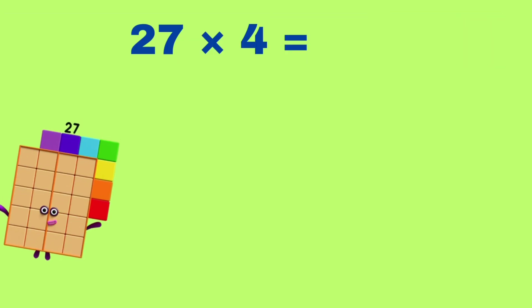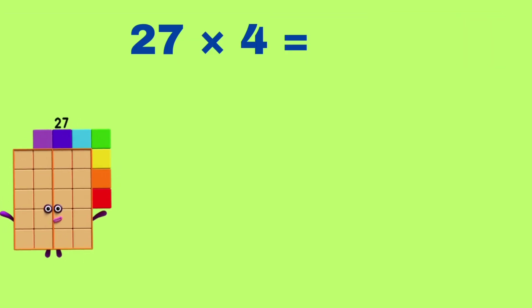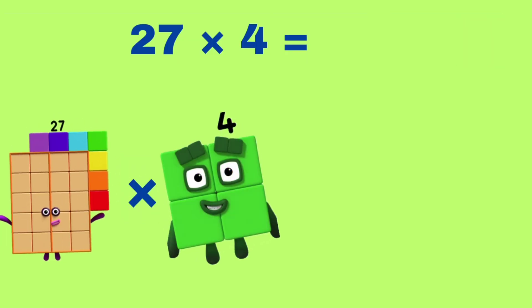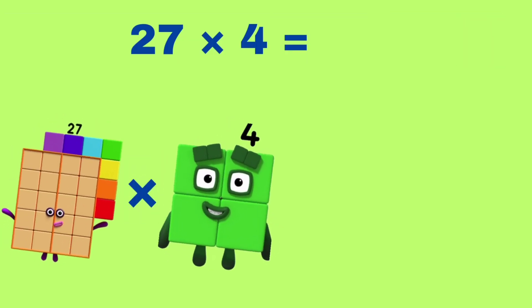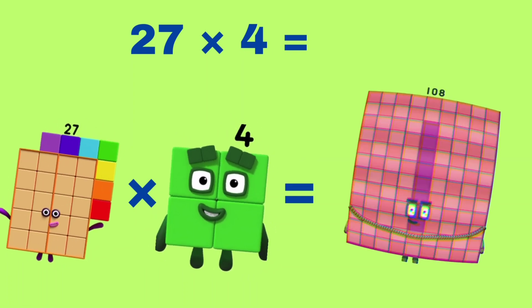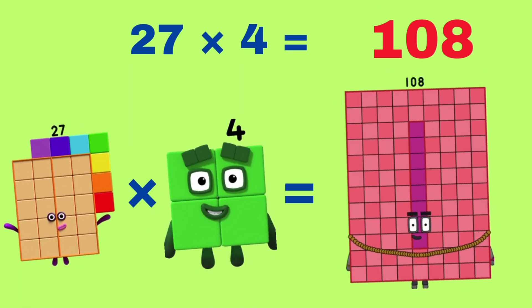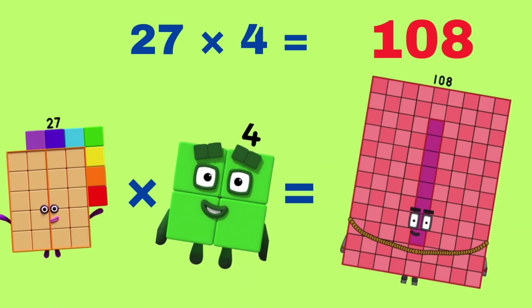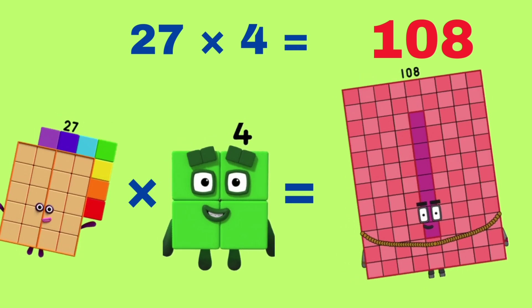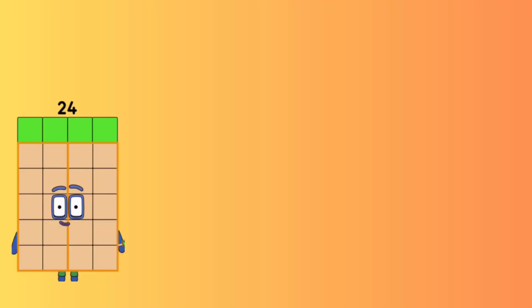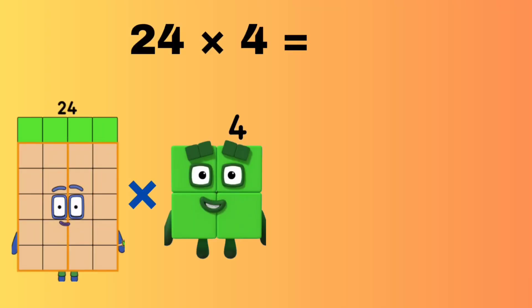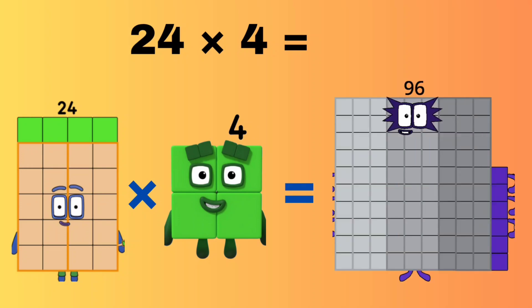27 multiplied by 4 equals 108. 24 multiplied by 4 equals 96.